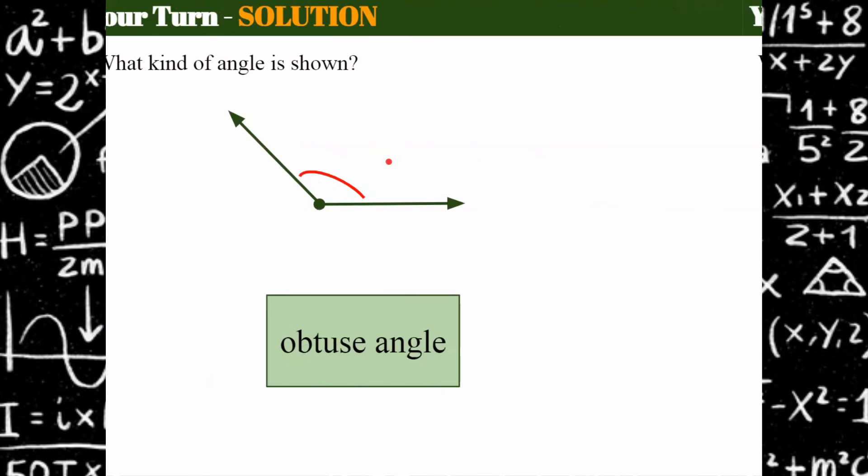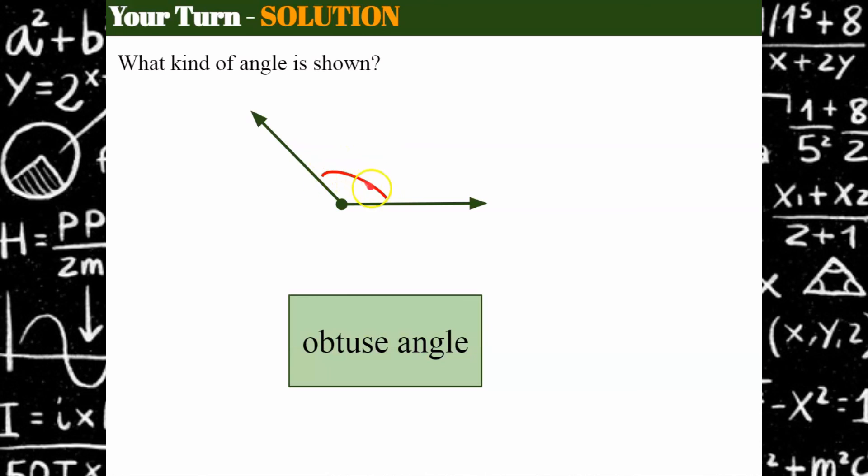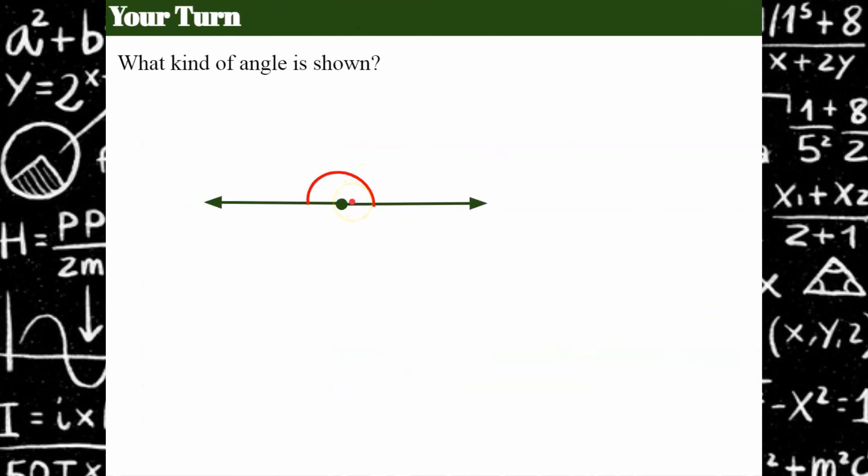Welcome back. So hopefully you identify that this is an obtuse angle. It's greater than 90. Remember, 90 would be straight, would be perpendicular right here with a vertice going straight up, forming a right angle. So that one was obtuse.